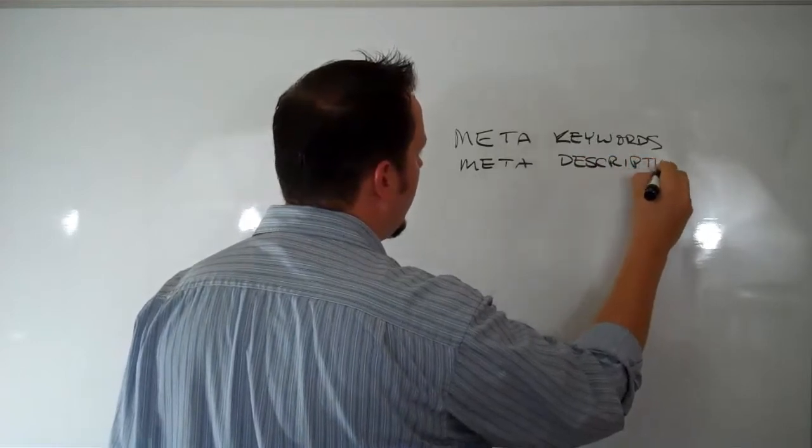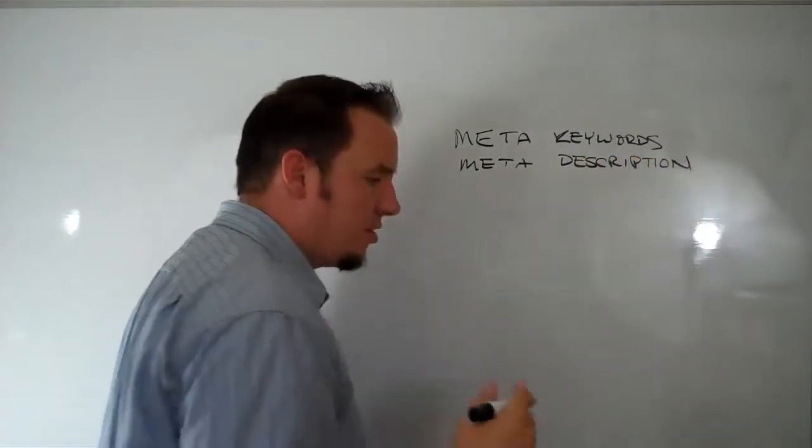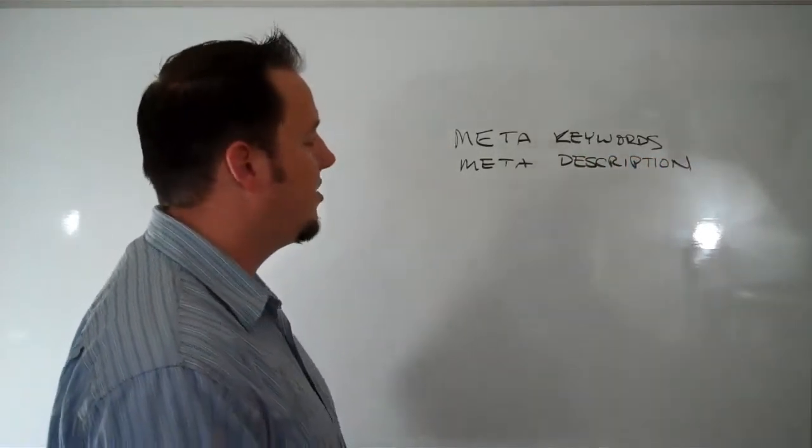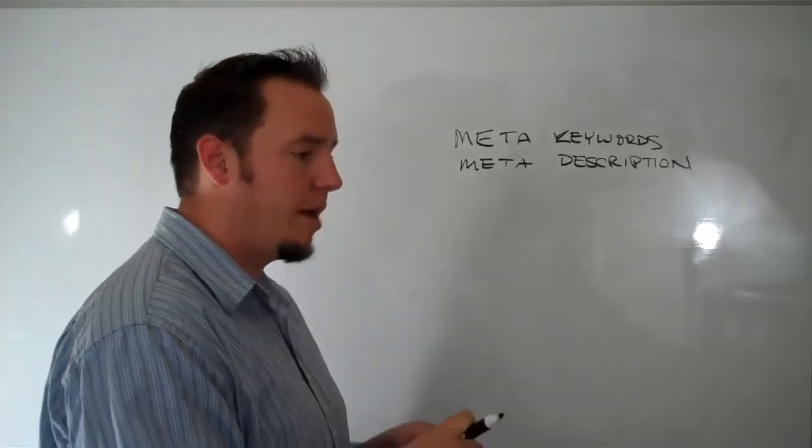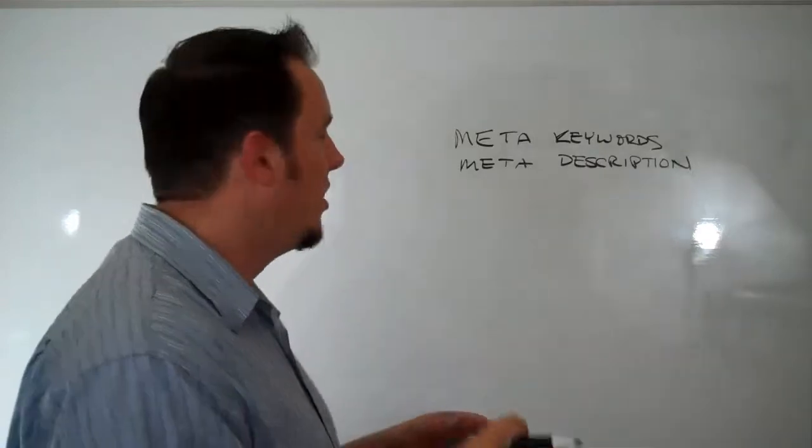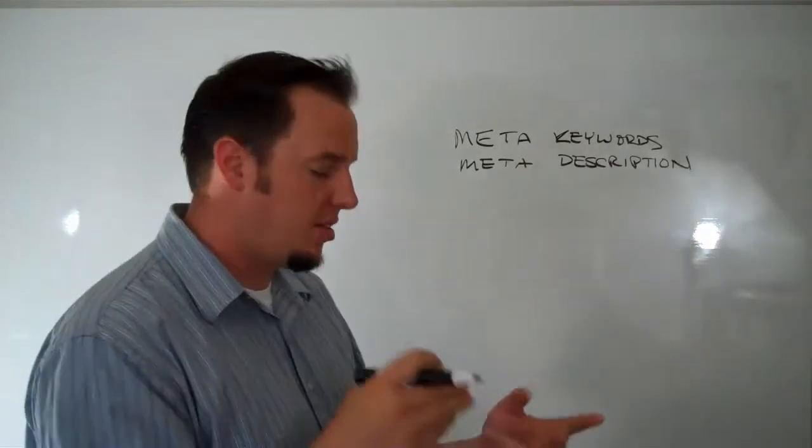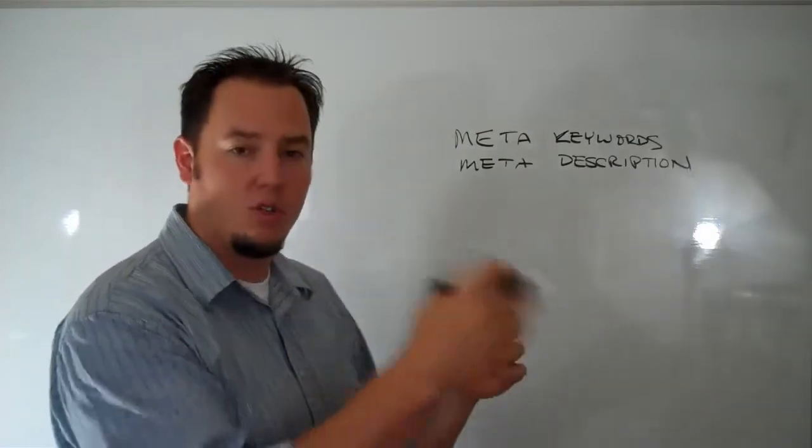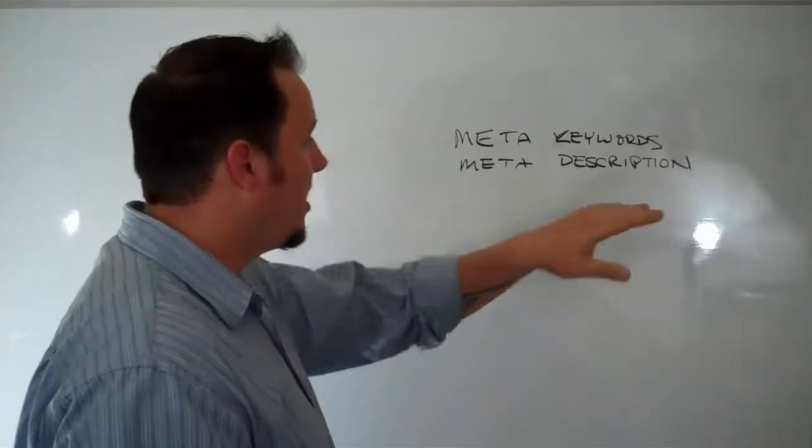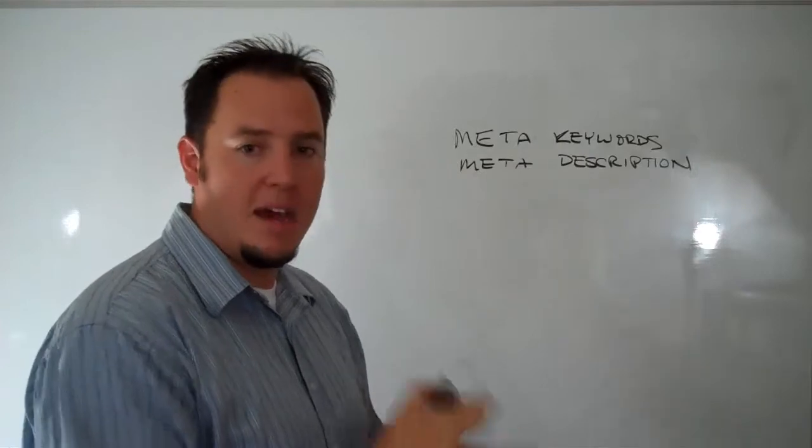So a lot of people know where to find this on their site. It's usually in your main homepage's index.html file. In WordPress and in Joomla and content management systems, there's actually a box in the control panel where you can set these. That stuff matters not a bit, okay?